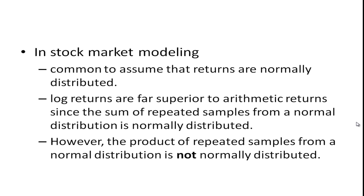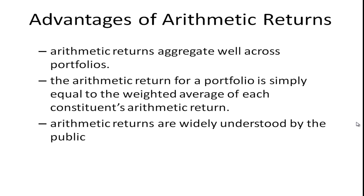Log returns are far superior to arithmetic returns since the sum of repeated samples from a normal distribution is normally distributed. But this is not, however, the product of repeated samples from a normal distribution is not normally distributed. So when we take 1 plus r times 1 plus r times 1 plus r, that is not normally distributed. And if you're making some assumptions on the return distributions, then the log is better because we actually add those together and the additive property is normally distributed.